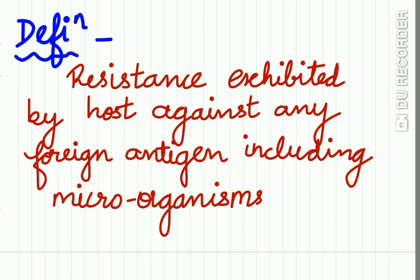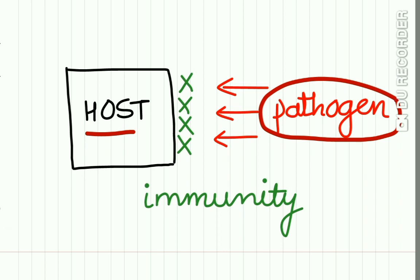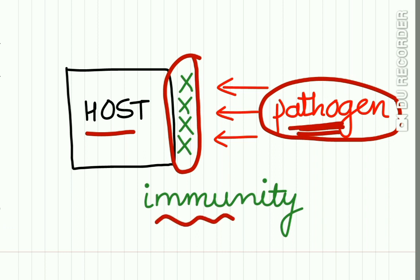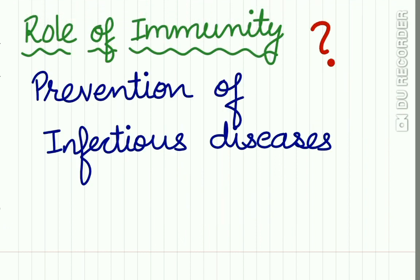How do we define immunity? Immunity is the resistance exhibited by the host against any foreign antigen including microorganisms. If this is a host and this is a foreign antigen or a microorganism infecting the host, then the resistance shown by the host against this infectious agent is called immunity. Immunity functions in the prevention of infectious diseases.